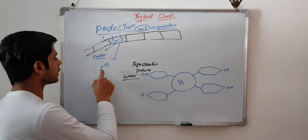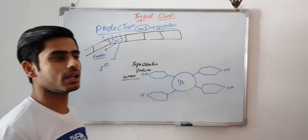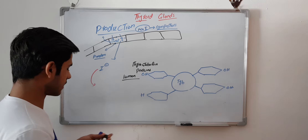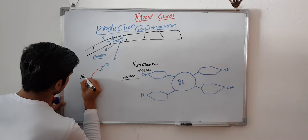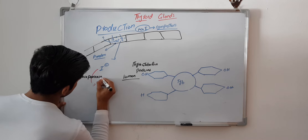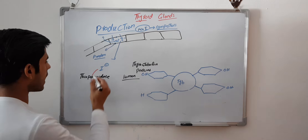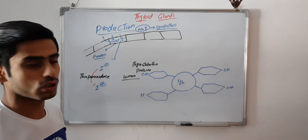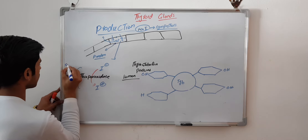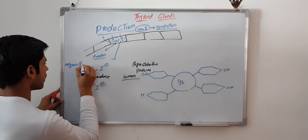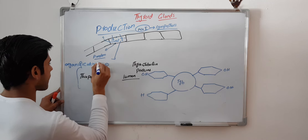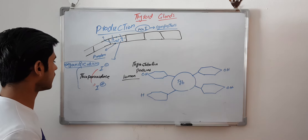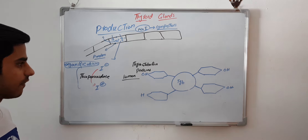The second step is the activation of iodide ions. Iodide negative ions will be changed into iodide positive through an enzyme known as thyroperoxidase. With the help of this enzyme, iodide negative is changed into iodide positive. This process is known as organification.